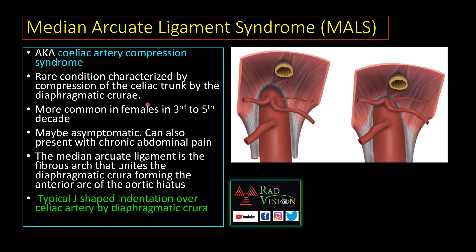Median arcuate ligament syndrome is a rare condition occurring in females between the third to fifth decade. The right crus, left crus, and median arcuate ligament are normal structures, but sometimes on deep inspiration the median arcuate ligament compresses the celiac trunk. Thanks to Usmania College students for contributing these cases of superior mesenteric artery and median arcuate ligament syndrome.